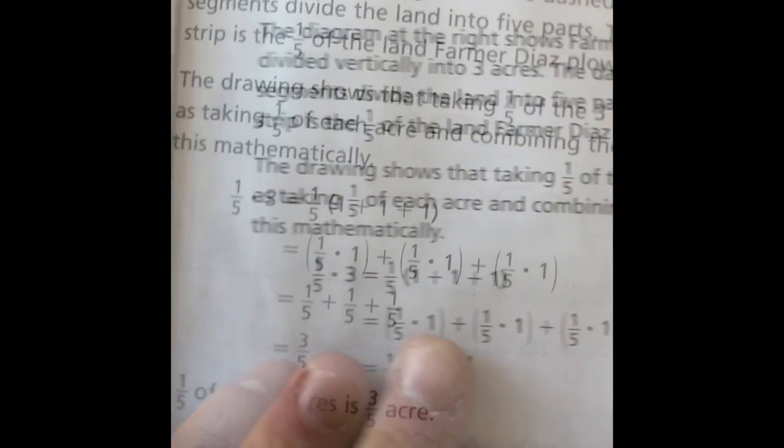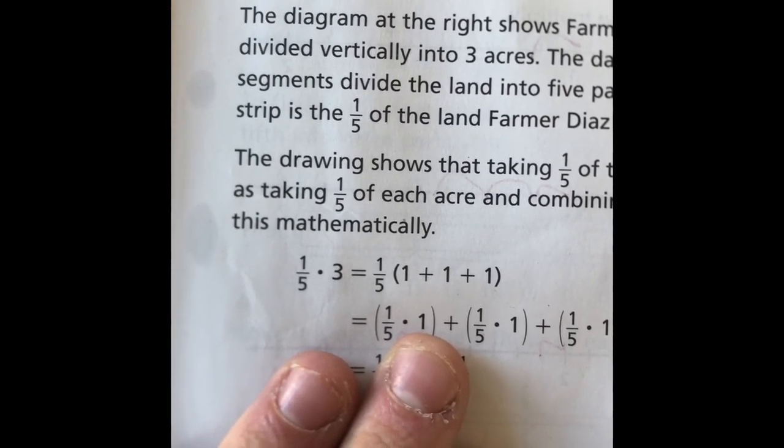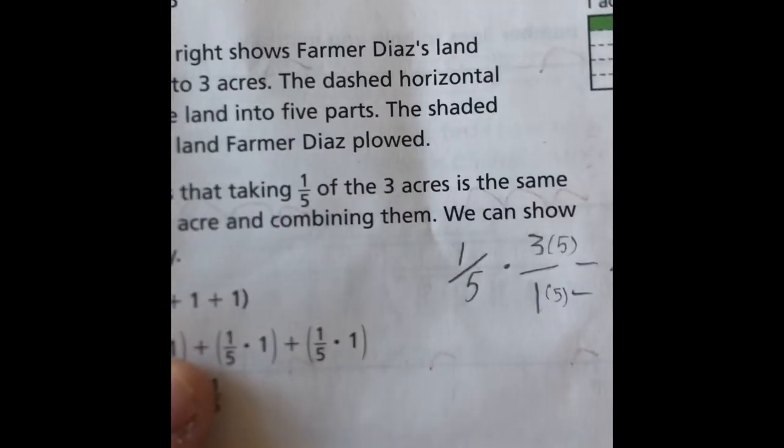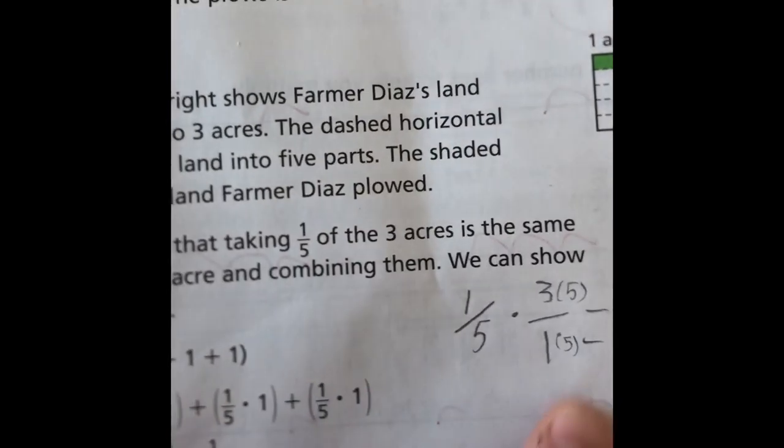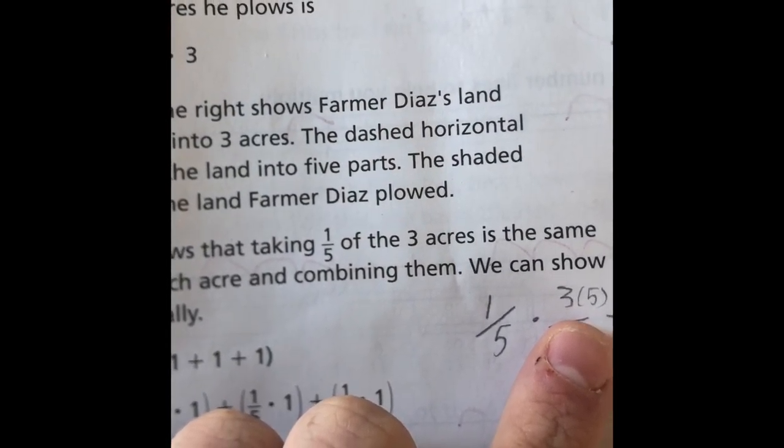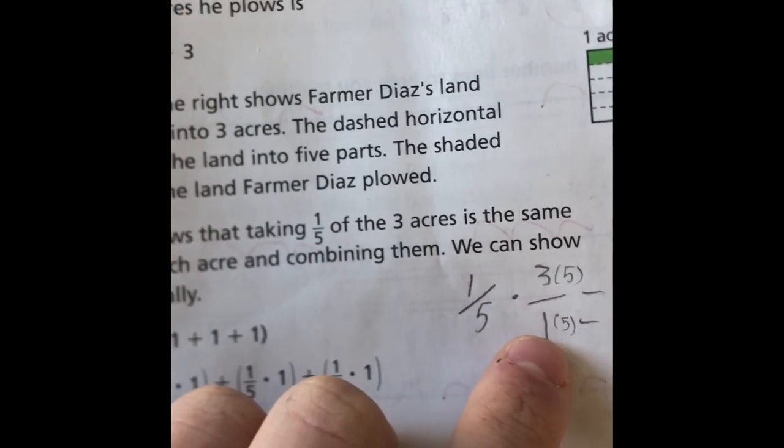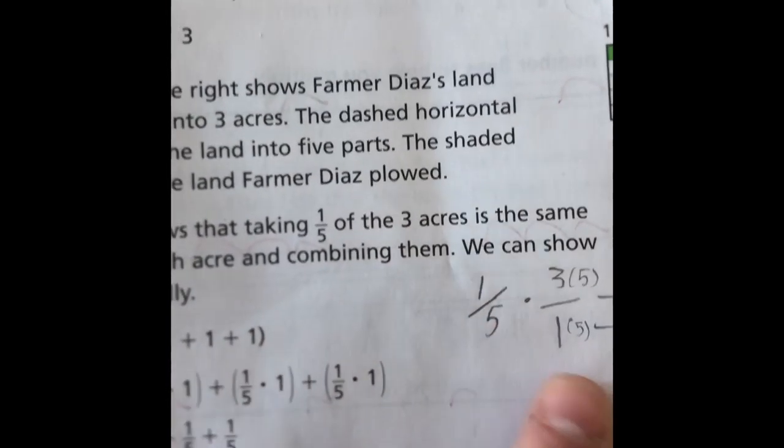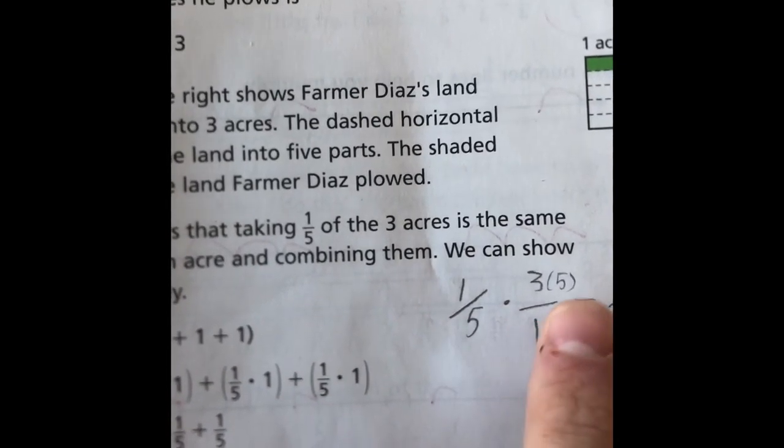But what is another way we could have done this? Right, we could have found a common denominator. If we're doing one-fifth times three, what would be the denominator for three? Right, yes, Sophia, it would be one. So our problem setup should look like this: one-fifth times three over one.